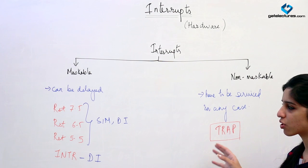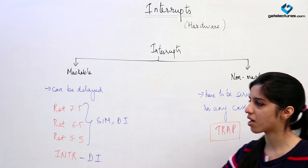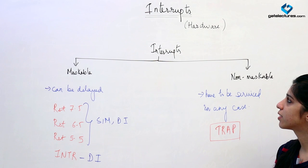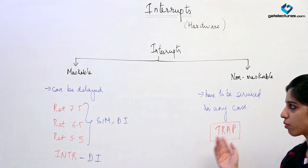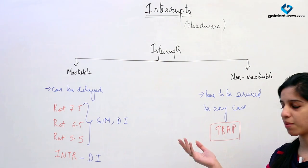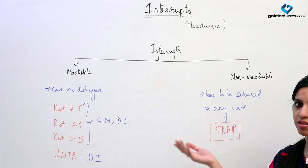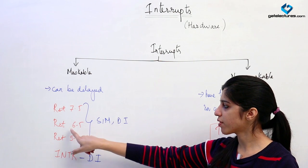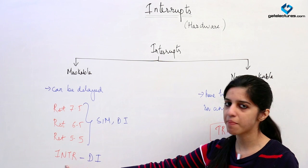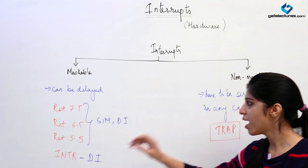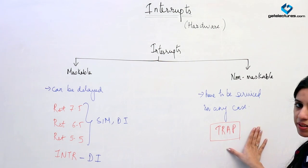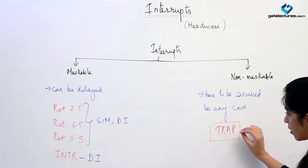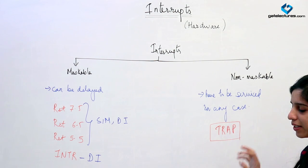INTR is a non-vectored interrupt. We have also learned that interrupts can be maskable or non-maskable. Maskable interrupts are those which can be delayed using some instructions or program. RST 7.5, 6.5, 5.5, and INTR are maskable interrupts, and trap is a non-maskable interrupt — it has to be serviced whenever this pin is raised and cannot be delayed.